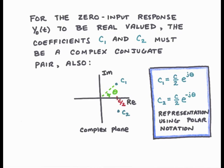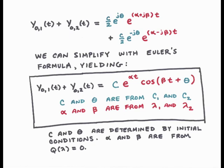So what does it mean for c1 and c2 to be a complex conjugate pair? It means one coefficient is the mirror image of the other in the complex plane. We can express this in polar notation: c1 equals c over 2 e to the j theta, and c2 equals c over 2 e to the minus j theta. Taking c1 and c2 in polar form, multiplying by e to the lambda 1 t and e to the lambda 2 t respectively, and adding them together, we can simplify using Euler's formula and write y01 of t plus y02 of t equals c e to the alpha t cosine of beta t plus theta.